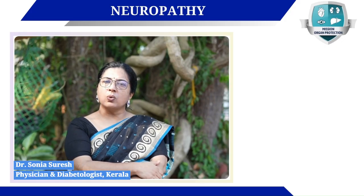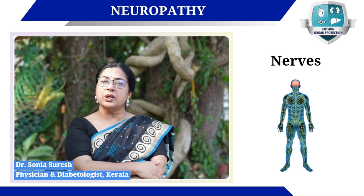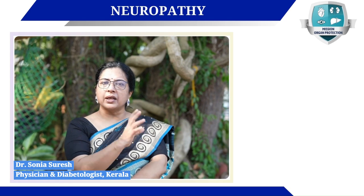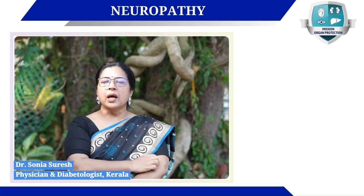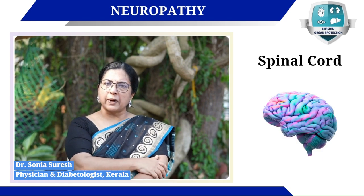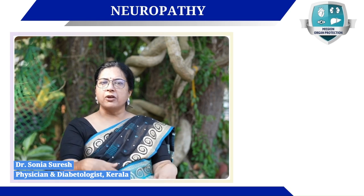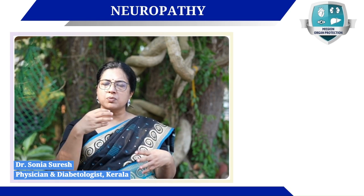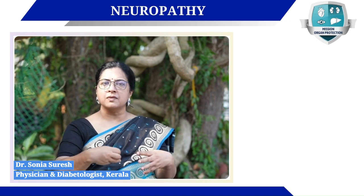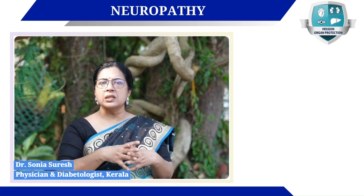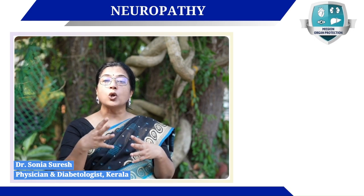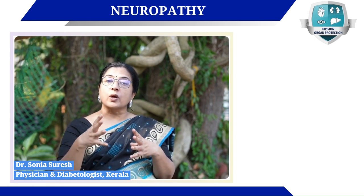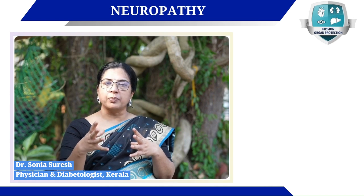Neuropathy is how the affliction of the nerves happens. The nervous system is divided into a central nervous system consisting of the brain and the spinal cord. There is a peripheral nervous system which involves all the nerves — small nerves, big nerves — across the various body parts, and there is an autonomic nervous system which controls the visceral or internal organs.